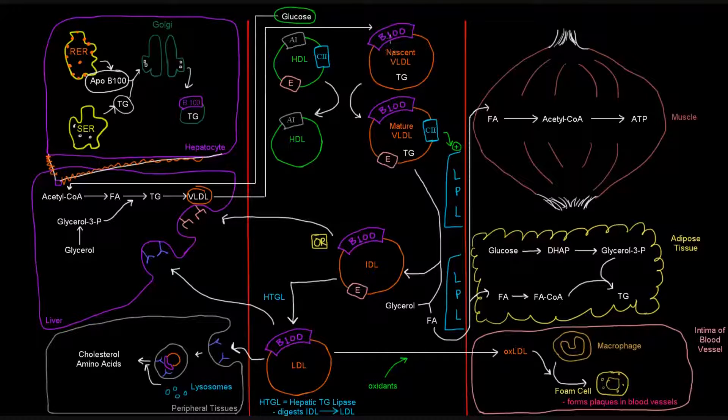So it only has that B100 now, and that's because it's going to get its C2 and E both from the HDL particle. So the HDL is left with just A1, and the mature VLDL particle has both the C2 and the E.